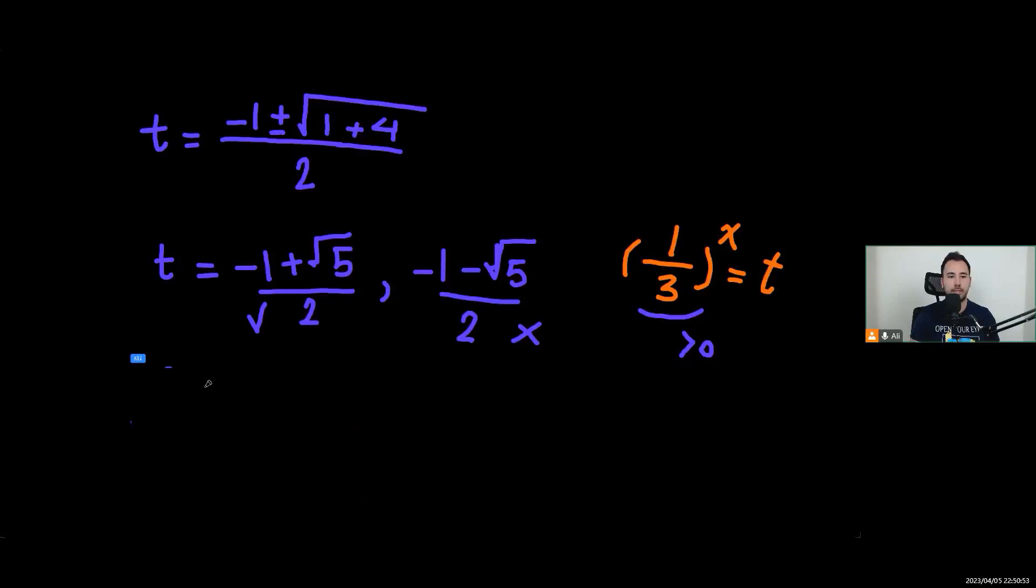So what we're going to have is 1 over 3 to power of x equals this one, which is positive, because negative 1 plus the square root of 5 is positive, of course, obviously.